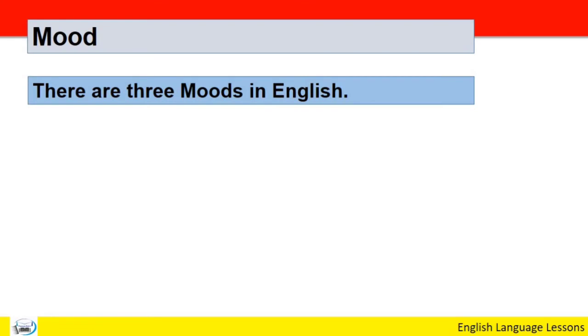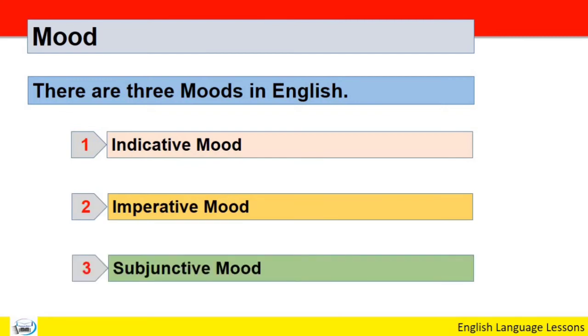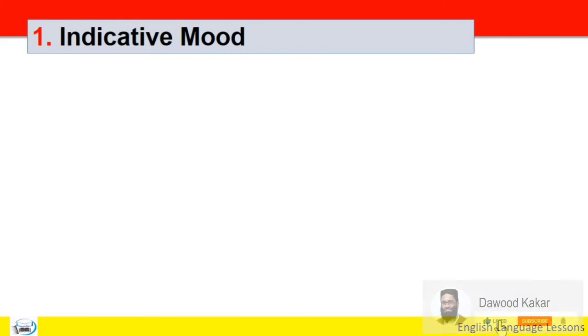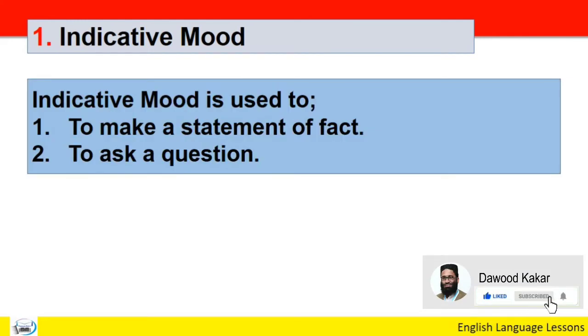There are three moods in English. English mein three moods hota hai: Number one - Indicative mood, Number two - Imperative mood, Number three - Subjunctive mood. To sab se pehle hum indicative mood ko dekhte hain. Indicative mood is used to number one: make a statement of fact, number two: to ask a question.